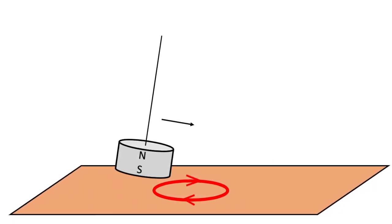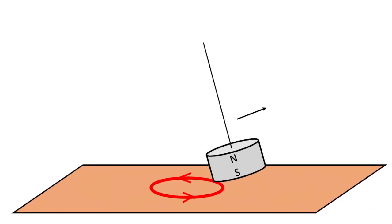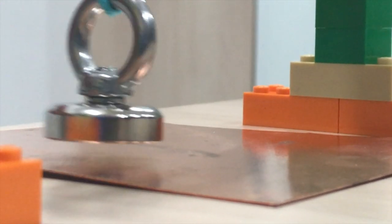These eddy currents flow in such a way as to repel the magnet as it approaches the plate and attract the magnet as it leaves the plate, therefore slowing the magnetic pendulum.